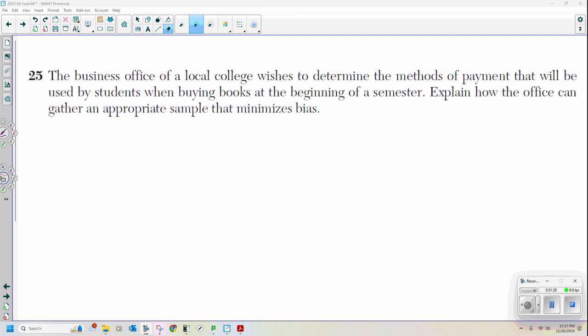Number 25. And the two-point short answer questions are typically really easy, comparatively to the multiple choices will be a lot easier. A business office at a local college wishes to determine the method of payment that will be used by students when buying books at the beginning of the semester. Explain how the office can gather appropriate sample that minimizes bias. When it wants to minimize bias, we just got to make sure that it's done randomly. And I don't have to do any math. I just have to explain. So I'm going to use my words.